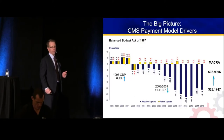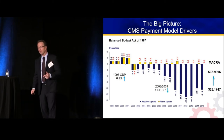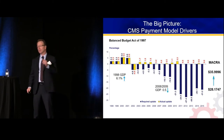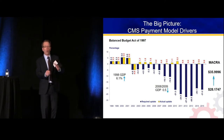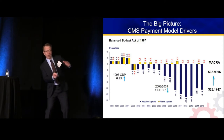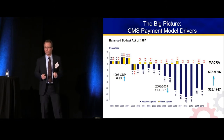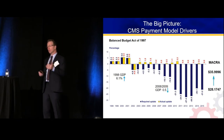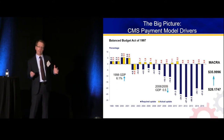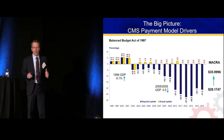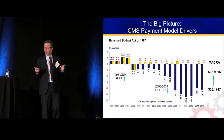If we look at the big picture, going all the way back to 1997, it was all about cost then — it was just called something else. The Balanced Budget Act in 1997 tied all required growth in Medicare spending and the Medicare budget to the growth of GDP, gross domestic product.